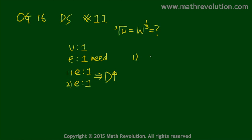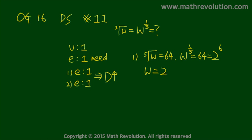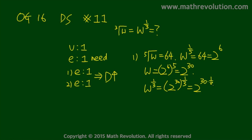Looking at condition 1, we have the fifth root of W equals 64. We can write it as W to the power of 1 over 5 equals 64, which is 2 to the power of 6. So W becomes 2 to the power of 6, raised to the power of 5, which is 2 to the power of 30. Therefore, W to the power of 1 over 3 becomes 2 to the power of 30 times 1 over 3, which equals 2 to the power of 10. The answer is unique and the condition is sufficient.